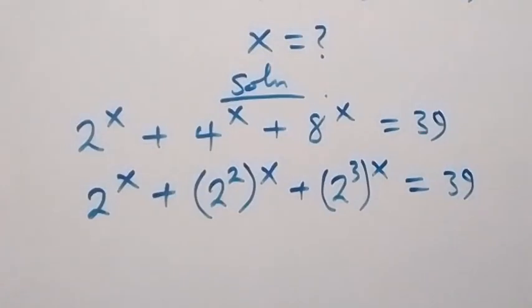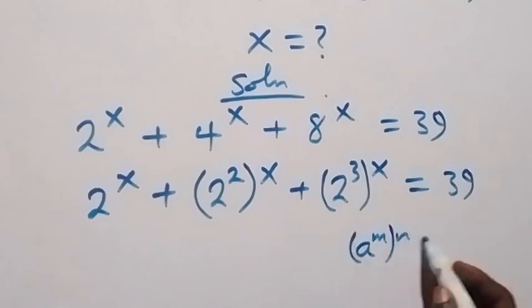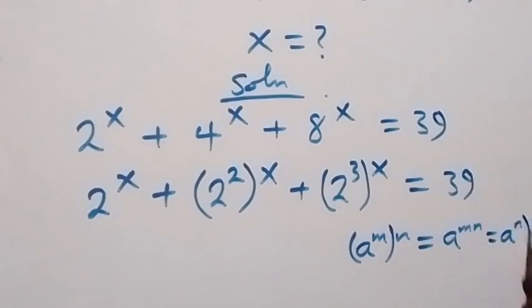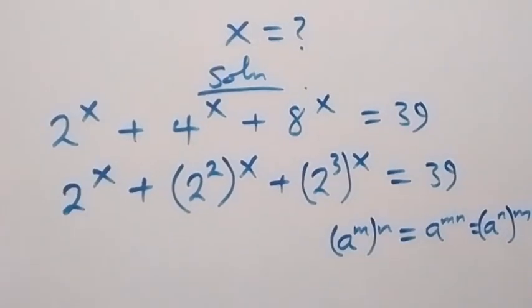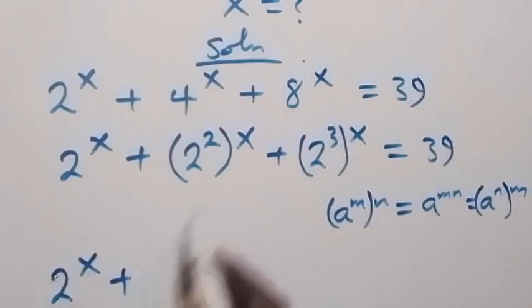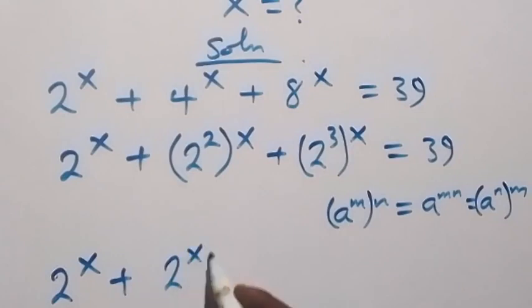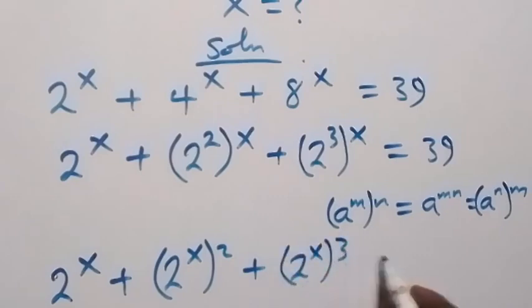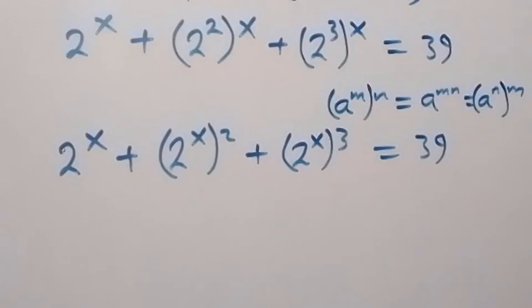In the next step, from the law of indices, when we have a raised to power m raised to power n, this can be written as a raised to power mn. Applying this here, we have 2 raised to power x, plus 2 raised to power x raised to power 2, plus 2 raised to power x raised to power 3, which equals 39.